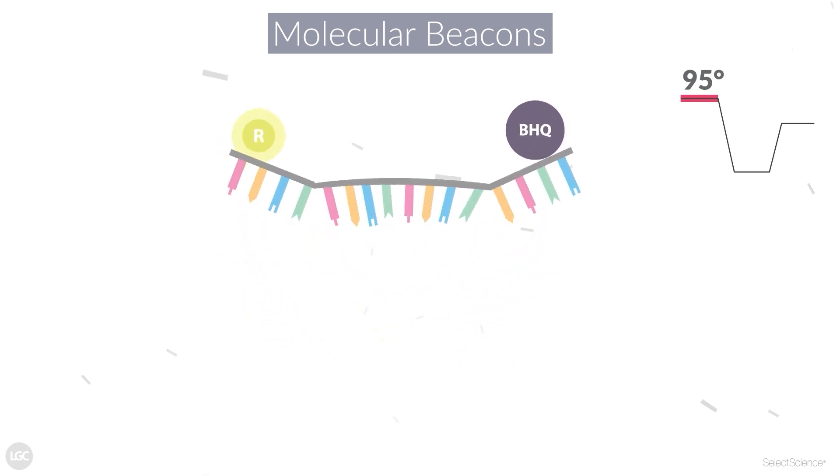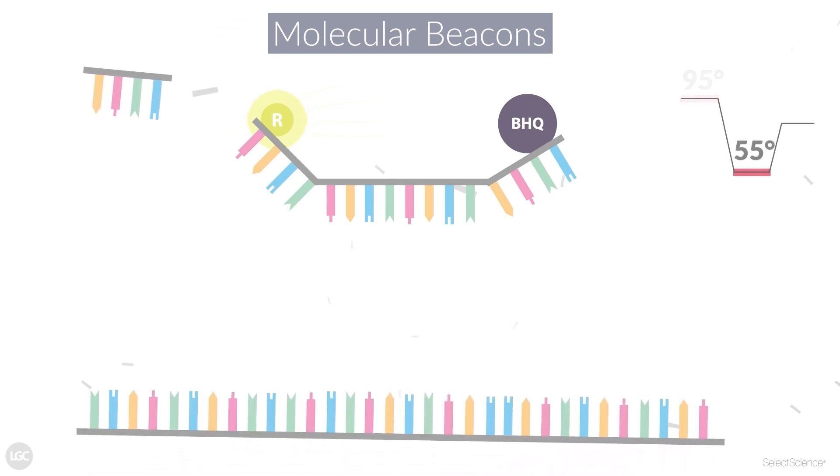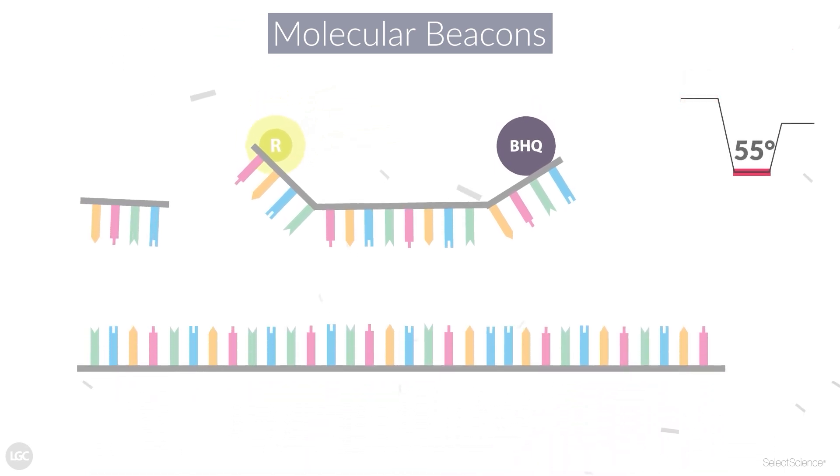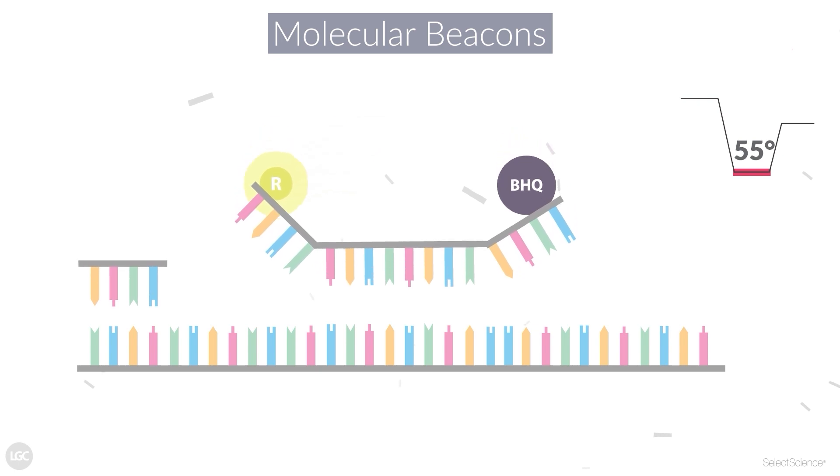When the temperature is decreased, the molecular beacon hybridizes to the target sequence. This holds the stem loop structure open and keeps the reporter separated from the quencher, thus releasing fluorescence without relying on probe hydrolysis.